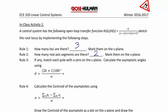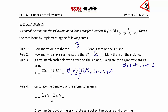Rule 3: if any, match each pole with a zero on the S-plane. For this example, we don't have any zeros, so we calculate the asymptotic angles: theta = (2k + 1) × 180° / alpha. Remember, alpha = n minus m, the number of poles minus the number of zeros. So alpha = 3 minus 0 = 3. This gives (2k + 1) × 60°. Our asymptotic angles are 60°, 180°, and negative 60° (also referred to as 300°).